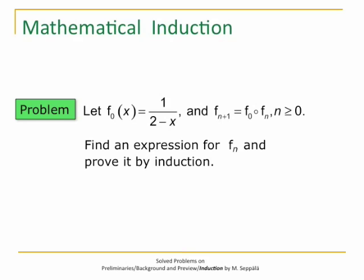In this problem we consider the function F0 defined by F0 at X equals 1 divided by 2 minus X. Then we define a sequence of functions by setting F at N plus 1 equals F0 composed with FN. So F1 is F0 composed with F0 itself, F2 is F0 composed with F1, F3 is F0 composed with F2, and so on. Our task is to find an expression for FN, guess an expression, and prove it to be true by induction.